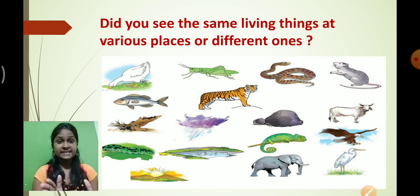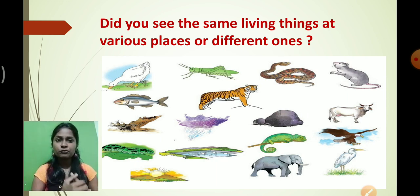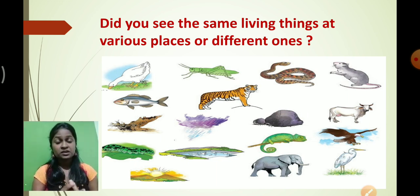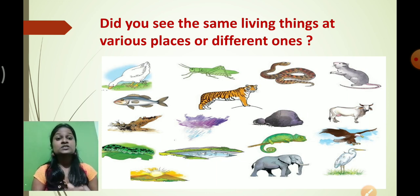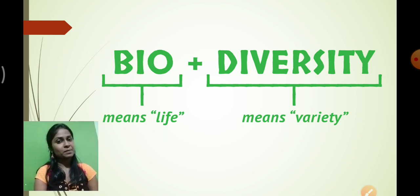All these animals are in variety — they are different from each other. We see a lot of variety in animals as well as in plants. These different varieties of living things which we see in our surroundings, what do we call them? We call it biodiversity.